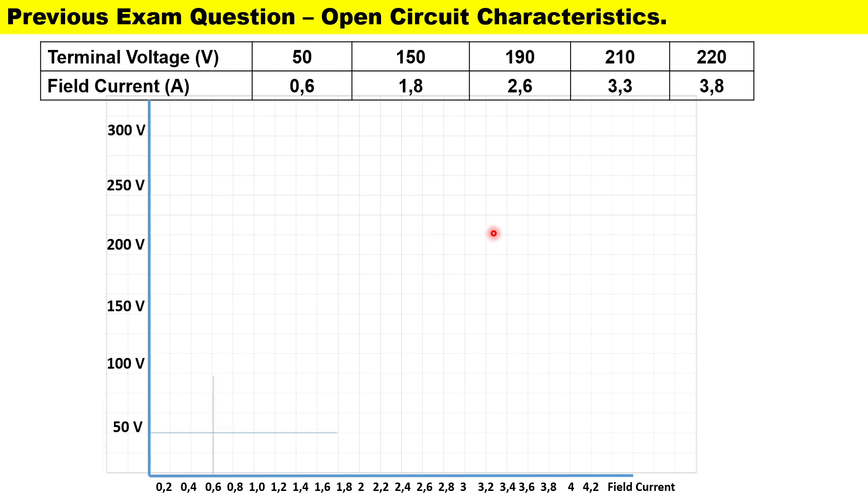Let's go ahead and plot that. Our first plot is we have 50 volts and 0.6 amps. Our second plot is 1.8 amps and 150 volts. Then our third plot we have 2.6 amperes and 190 volts.